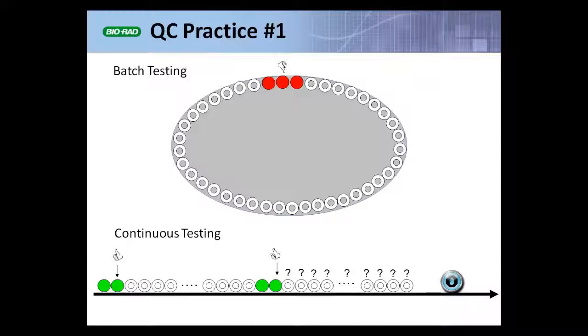But now in the cartoon shown here at the bottom, let's say I'm running QCs, patient samples, QCs, patient samples, and now I reach a stopping point. The stopping point might be the end of the second shift. Maybe I only run QCs two shifts a day, and now I'm finishing up for the day.